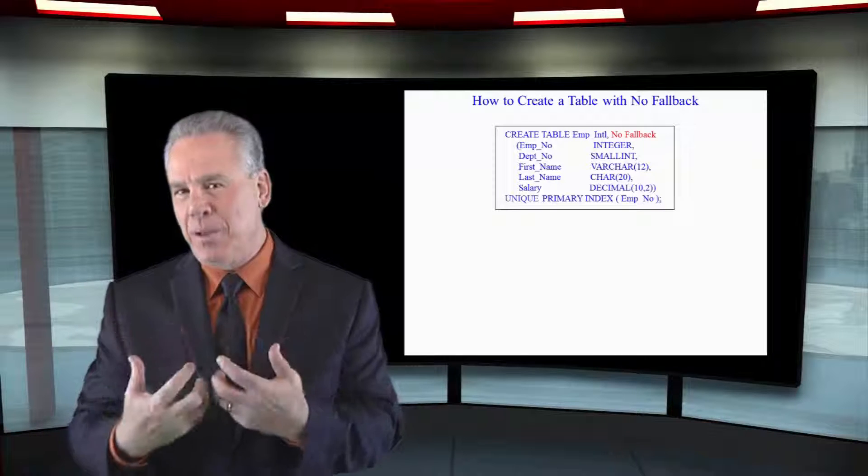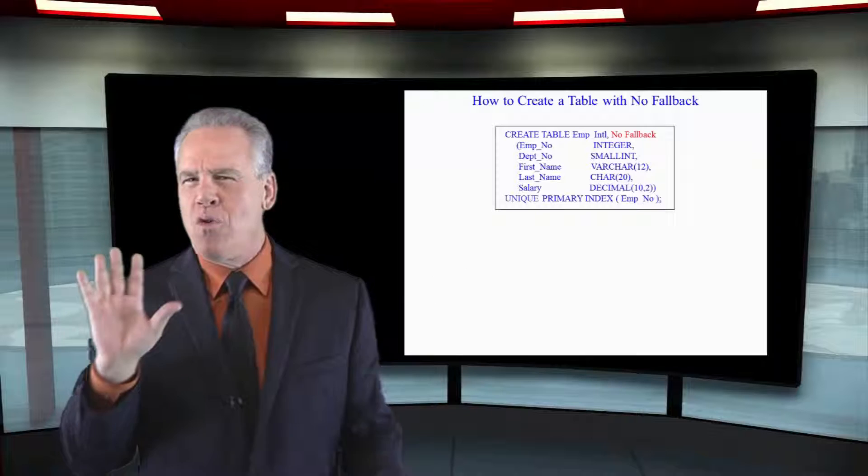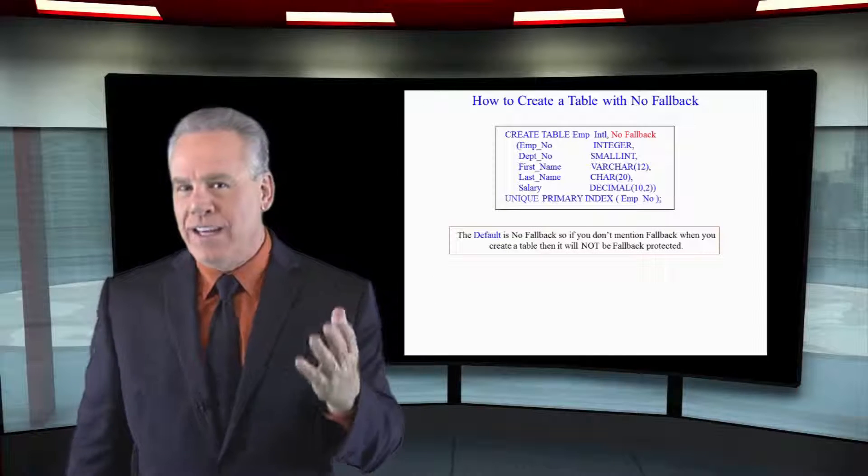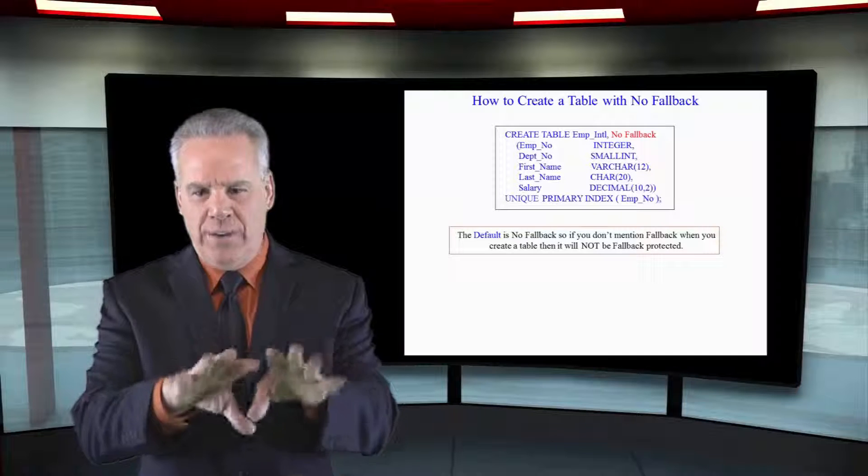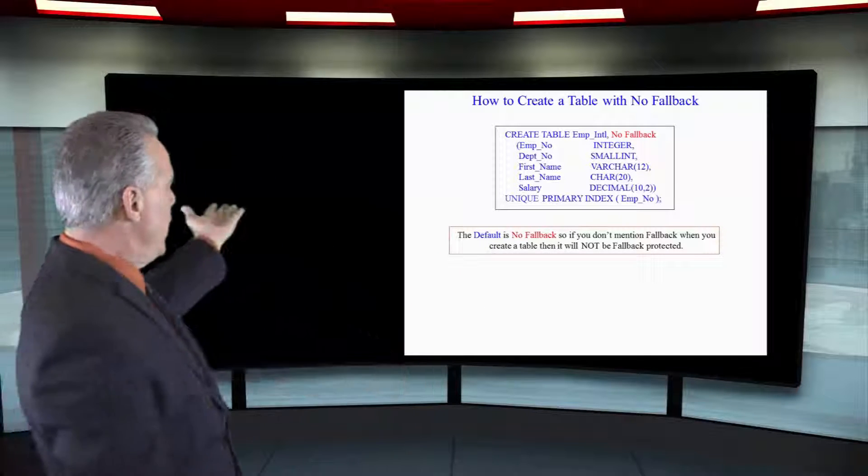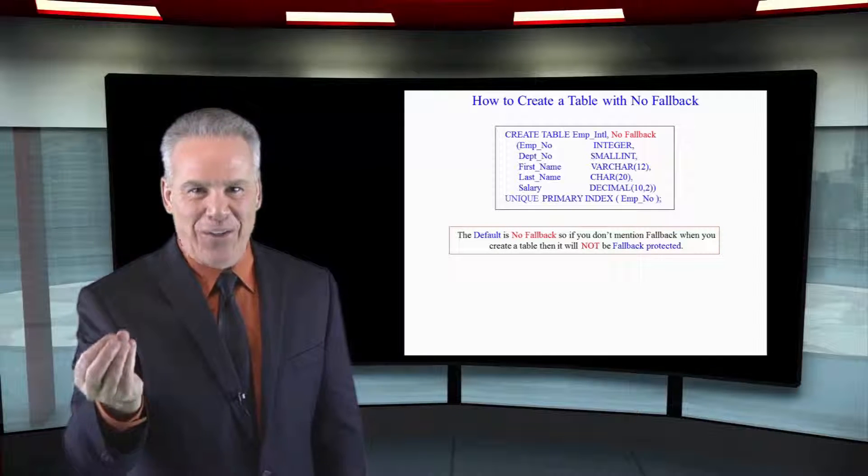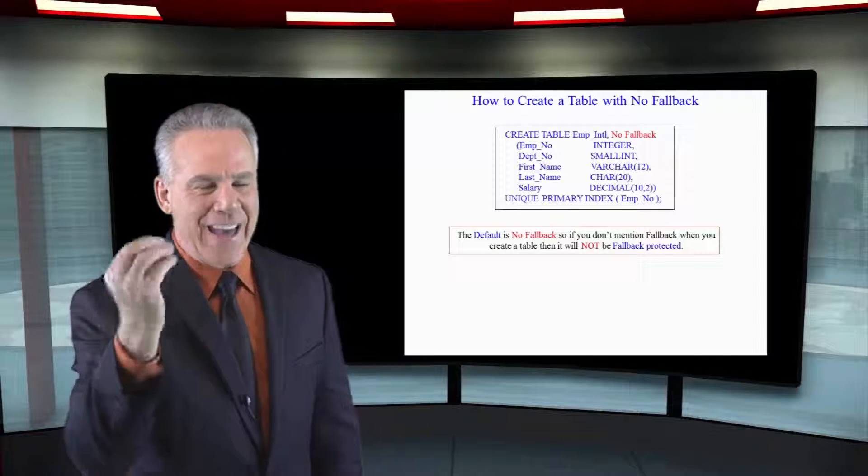There's a possibility that you'll create a table and won't even mention the word fallback. Later, you will view the DDL with a SHOW TABLE and the table name, and it'll come up and you'll see no fallback - that was the system default, so it's in there automatically.